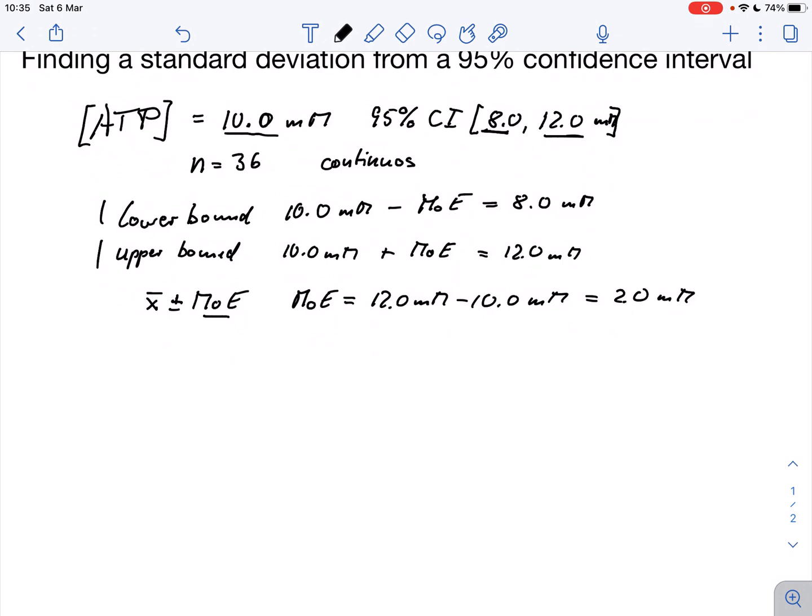And sometimes we also find our results then expressed as 10.0 millimolar plus minus 2.0 millimolar. And it's always important to check then in the research paper what they actually mean by that. Do they mean the margin of error or have they already used the standard deviation? If that is already the standard deviation then we don't have to do anything. But very often it is not and very often we don't even have this information, we just have this 95% confidence interval.